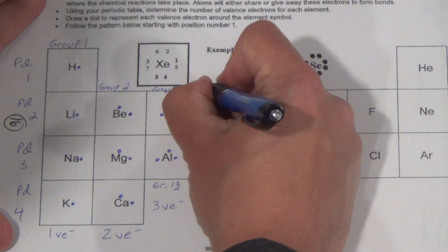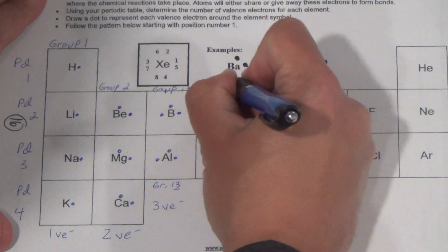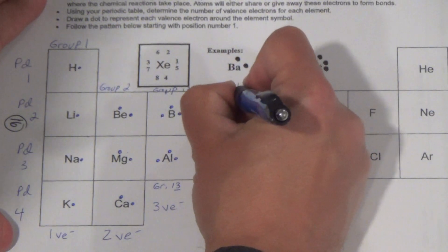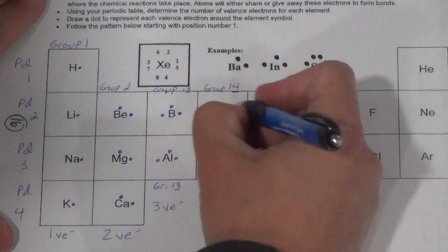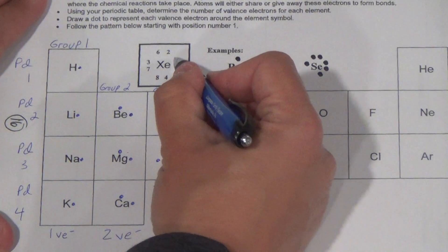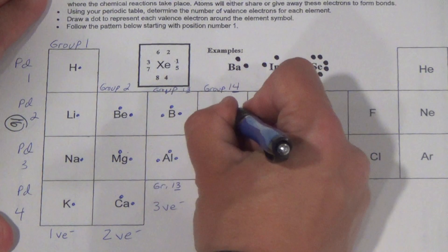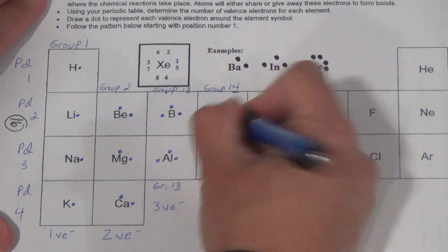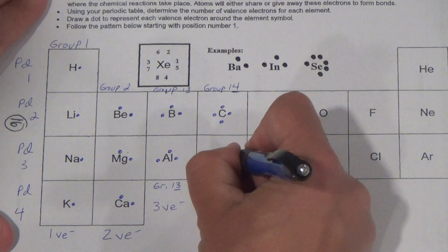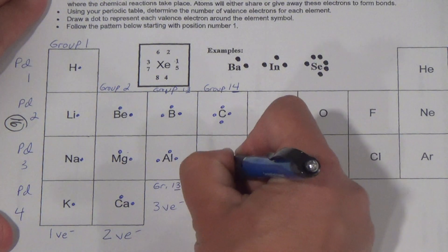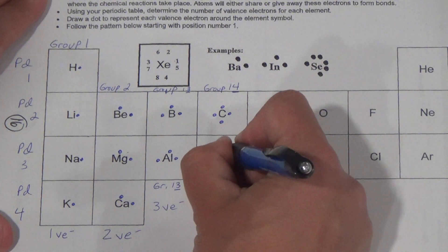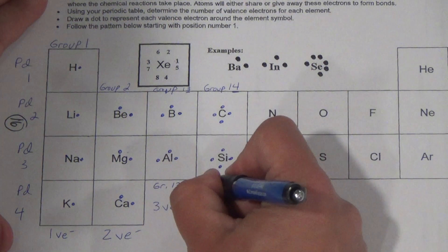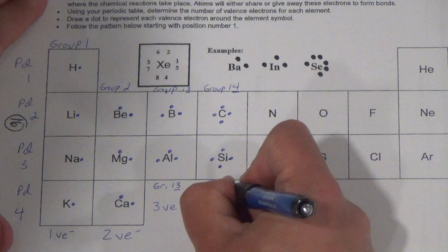Now you've got group 14. So underline the three from 13 and four from 14. That means we've got four valence electrons. So follow the format. One, two, three, four. Just like this. One, two, three, four. One, two, three, four. Just like that. Aren't these much easier than Bohr diagrams? And you're going to put here, they have four valence VE negative.